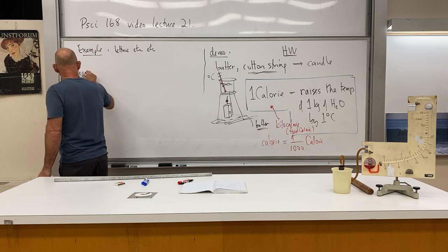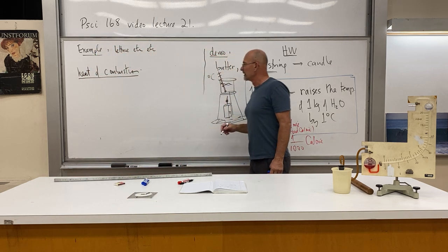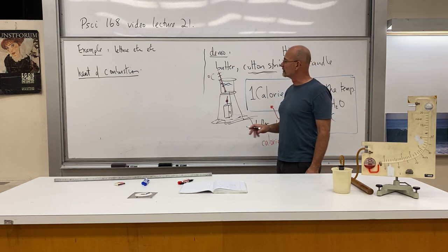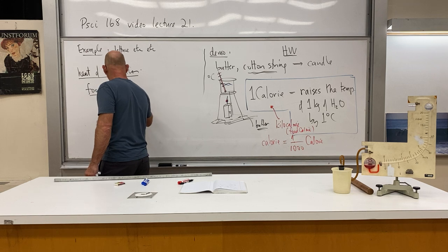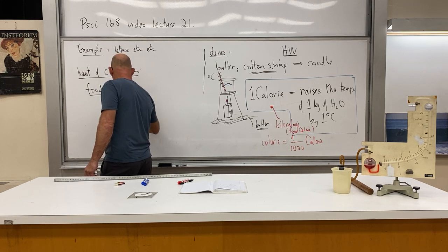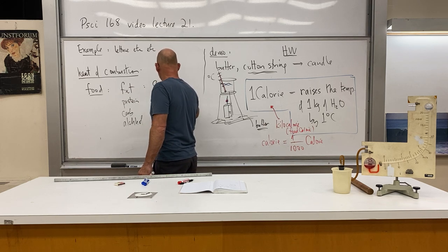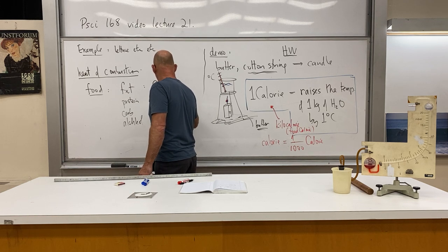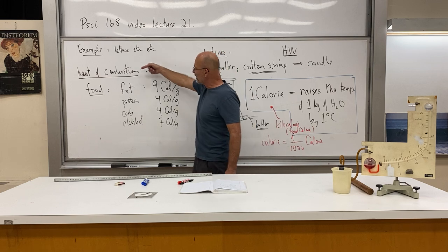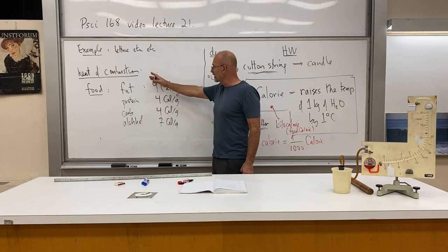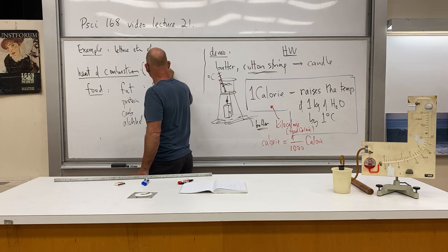Next let's talk about heat of combustion. There are typical amounts of heat of combustion for different substances. Since we're on the subject of food, we can talk about fat, protein, carbohydrate, and alcohol. Roughly, these have nine calories per gram, four calories per gram, four calories per gram, and seven calories per gram. This would be what you call the heat of combustion, the amount of calories per unit mass.